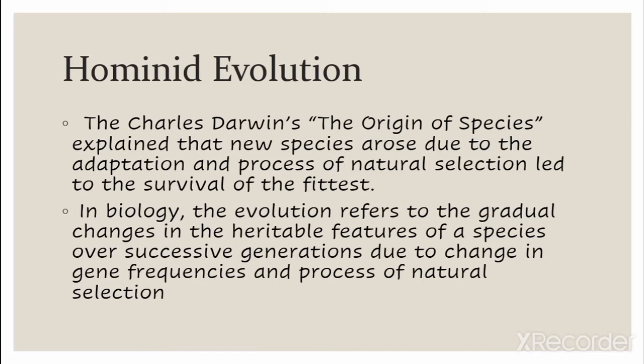Charles Darwin's book The Origin of Species is a very path-breaking and very important book. It explains how new species are formed due to adaptation and the process of natural selection, which led to the survival of the fittest. Charles Darwin explains that new species are formed due to adaptation — meaning fitting oneself into the environment — and the process of natural selection.